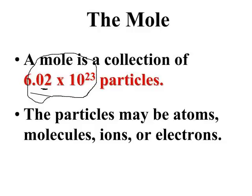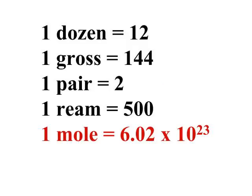These particles can be anything — they could be cars or people — but typically they are incredibly small objects like atoms, molecules, ions, or electrons. Because if you have more than 6.02 times 10 to the 23rd of a particle, unless that particle is incredibly small, you simply will not be able to have that large a number of them. Just remember that a mole is simply an amount of substance.